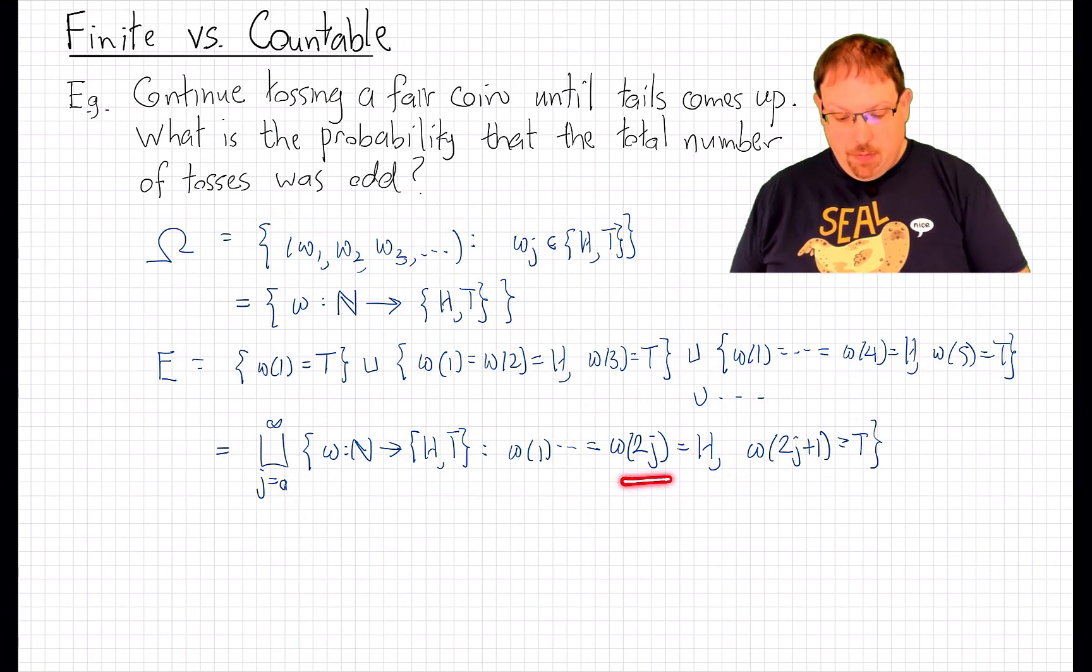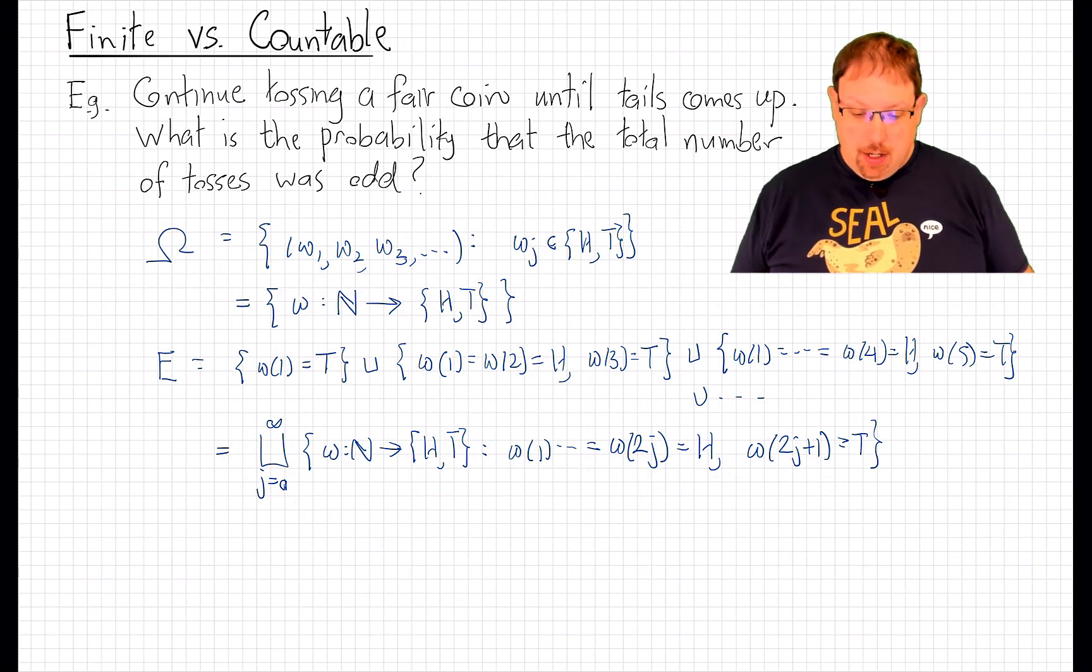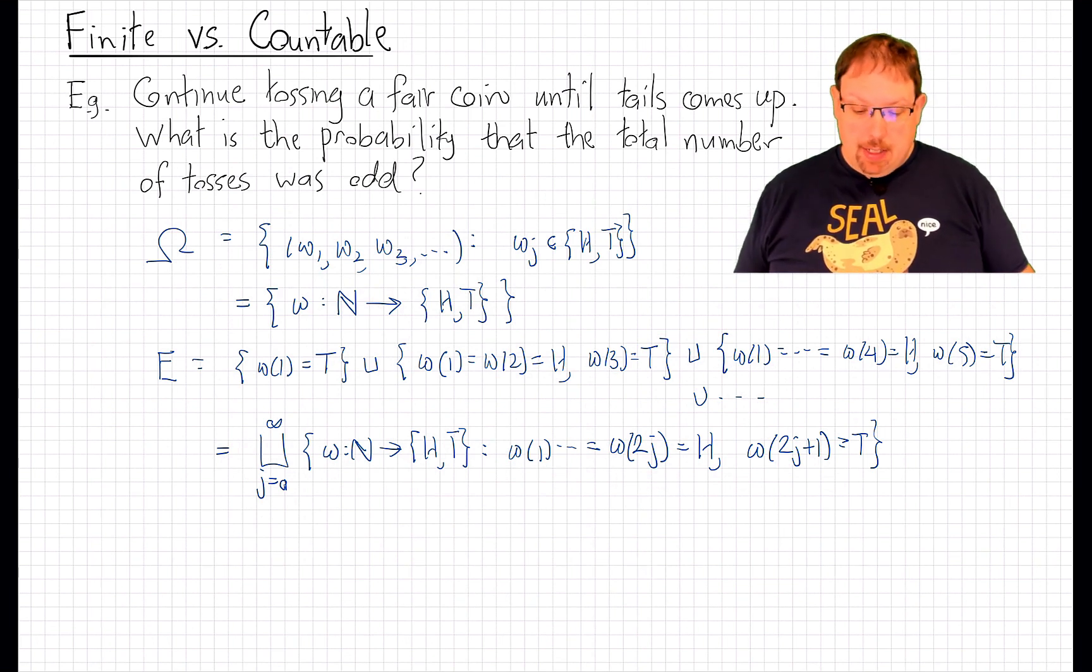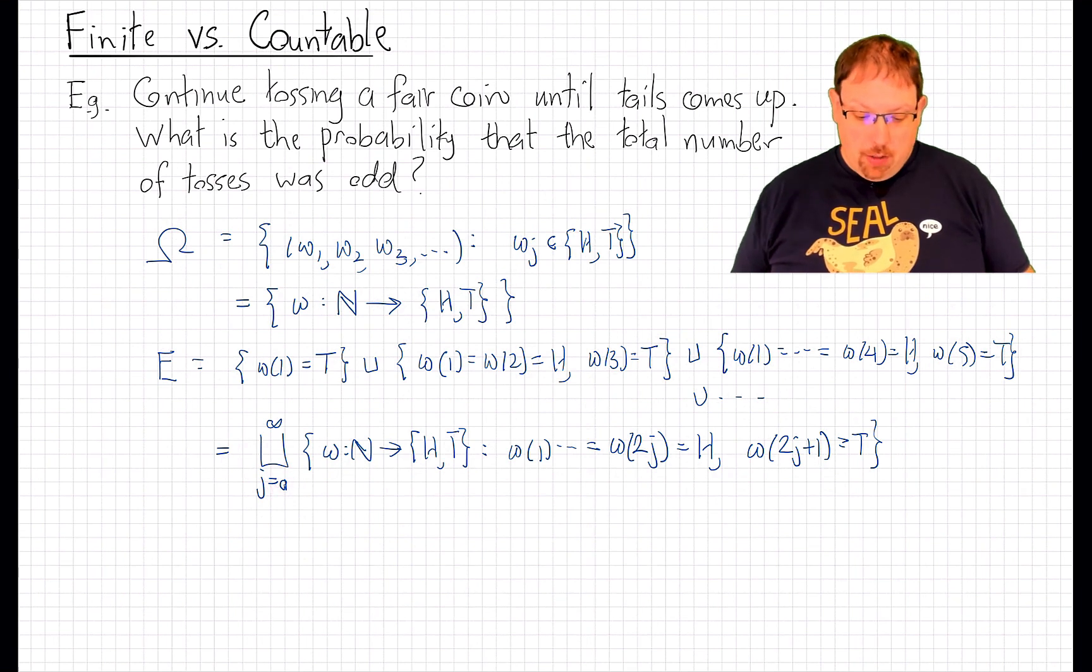If I have the first two tosses are heads, that's completely inconsistent with the first four tosses being heads, or the first toss being tails.